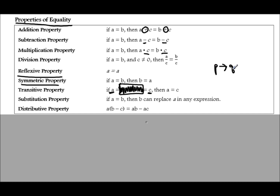This looks just like the law of syllogism that we just talked about, where you have p→q and q→r, giving you p→r. The q's are back to back, so you're left with p, then r.